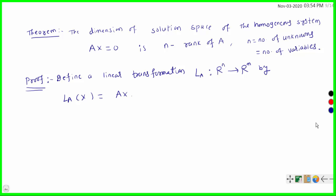Hi students, let us see a theorem related to the dimension of the solution space of a homogeneous system Ax = 0 and rank of this matrix. The dimension of the solution space of a homogeneous system Ax = 0 is n minus rank of A, where n is equal to the number of unknowns or number of variables.